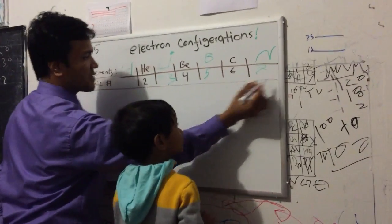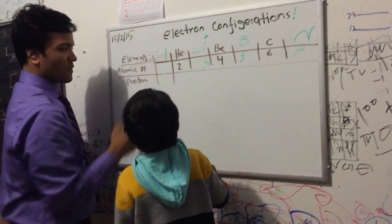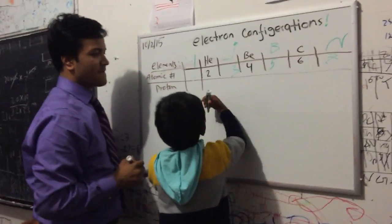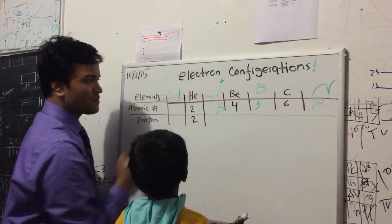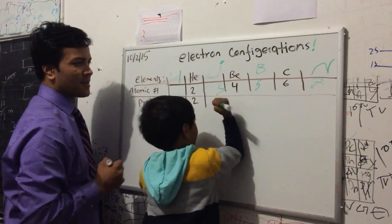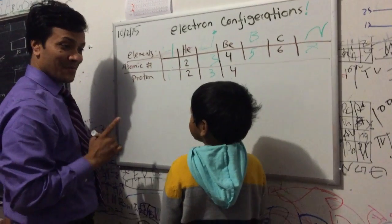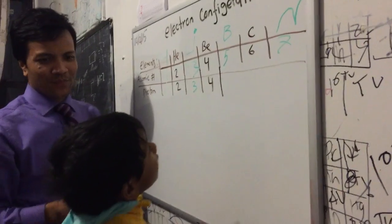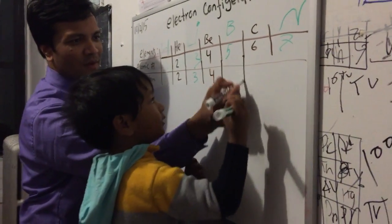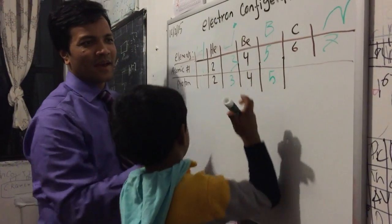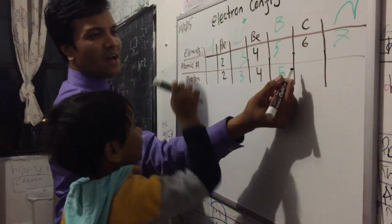Now we're gonna write protons. How many protons in hydrogen? Very good, so write one. In helium: two. In lithium: three. In beryllium the number of protons is four. Number of protons: five. Okay, write five here. And how many in carbon?